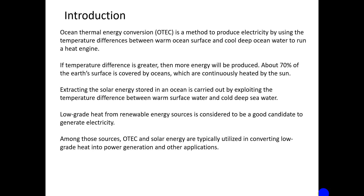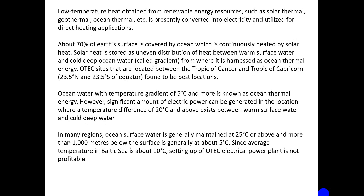If the temperature difference is greater, more energy will be produced. About 70 percent of the Earth's surface is covered by the ocean, which is continuously heated by the sun. Extracting the solar energy stored in the ocean is carried out by exploiting the temperature difference between the warm surface water and the cold deep sea water. This low-grade heat from renewable energy sources is considered a good candidate to generate electricity.